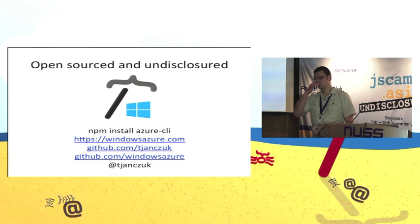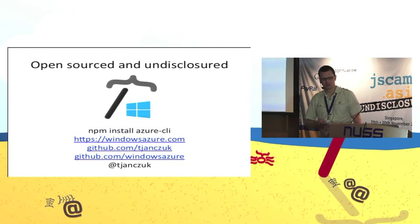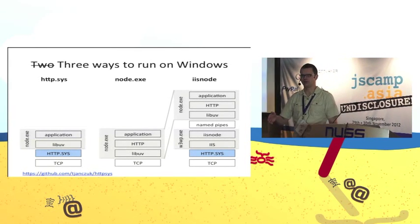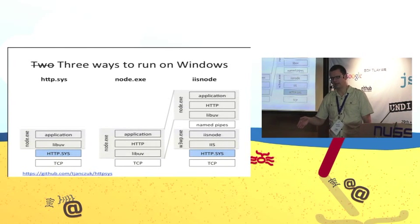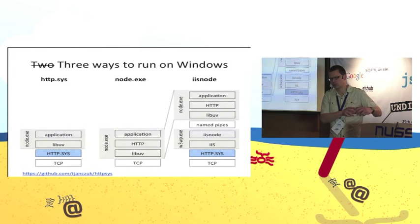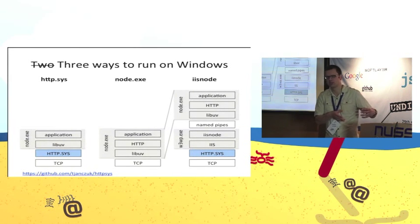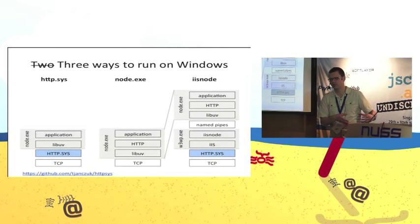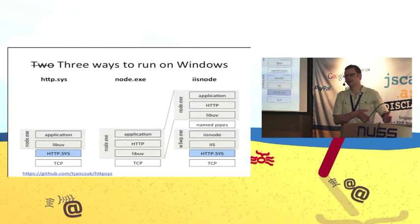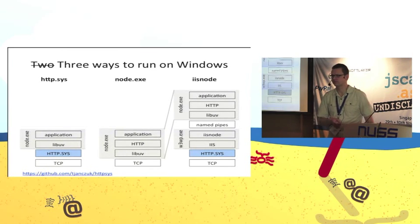Q: Is IIS Node going to replace the Cluster module for multi-processor support? A: Coming back to this picture — HTTP.sys is used in two contexts. First in the IIS Node stack which involves the full IIS web server. But the experiment I discussed is using just the HTTP.sys implementation of the HTTP protocol — built into Windows — as a replacement for the HTTP stack that Node.js ships with. When I said you can use the Cluster module, I referred to the leftmost picture — it scales out to multi-core machines using the regular Cluster module functionality built into Node.